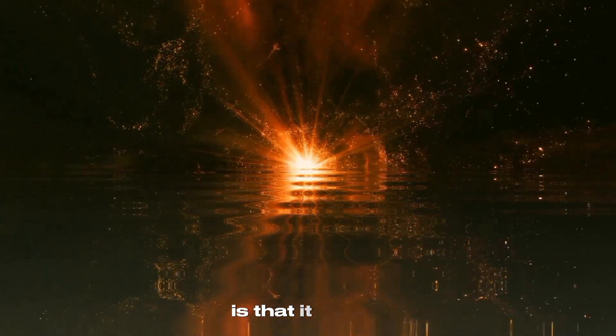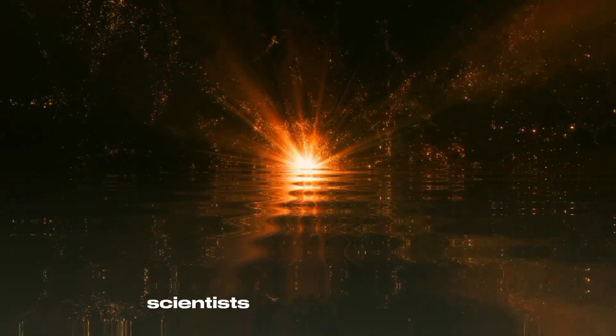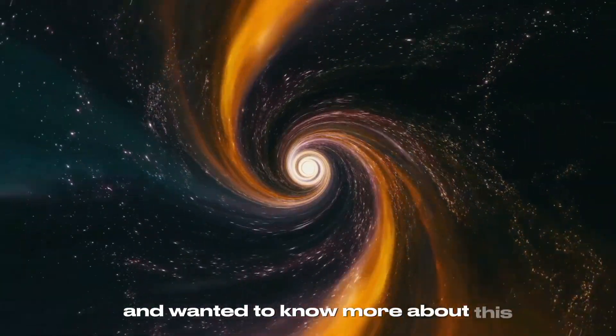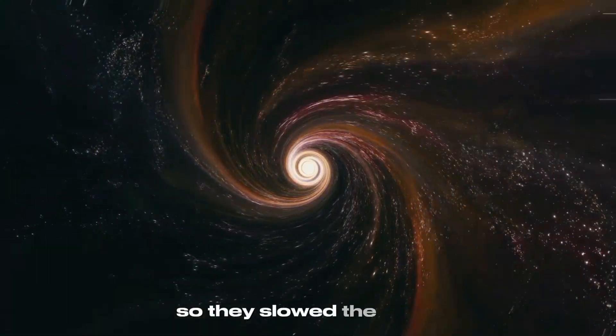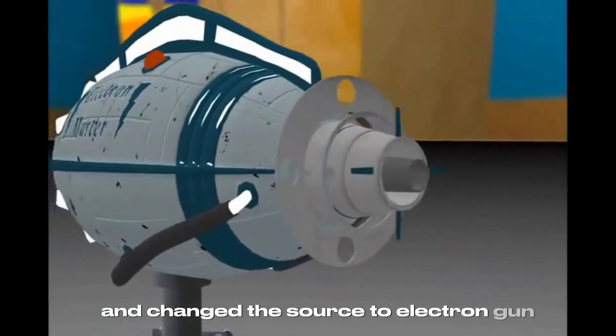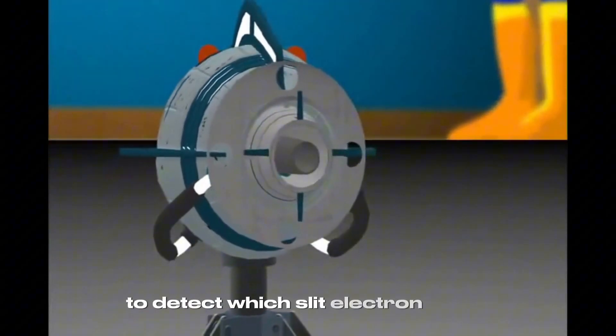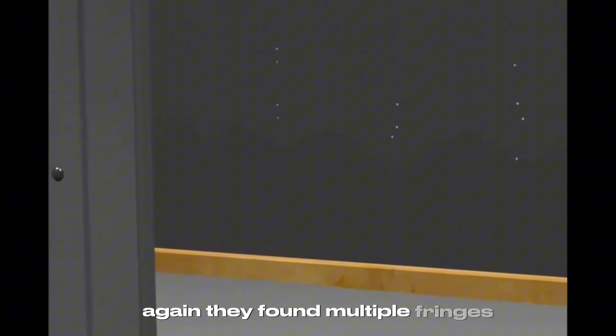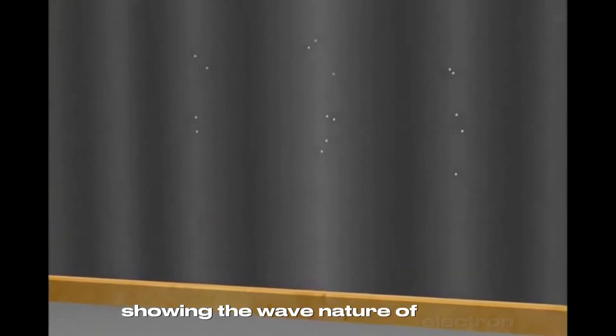Is that it? Not at all. Scientists were baffled with this experiment and wanted to know more about this. So, they slowed the source and changed the source to an electron gun to detect which slit the electron passes through. Again, they found multiple fringes, showing the wave nature of electron. Now, the interesting part begins.